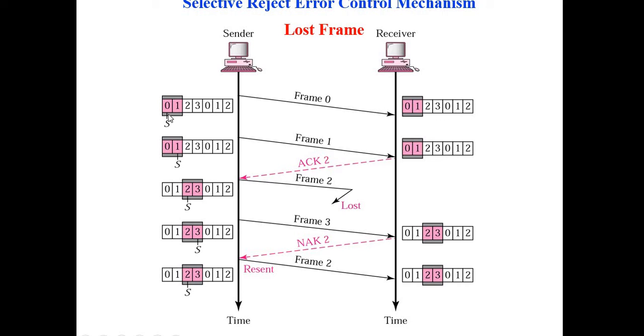So here in this example, S is equal to 0, frame 0 is transmitted. The receiver can receive frame 0 or frame 1 also. It's not necessary it has to receive 0 only. So 0 is sent and 0 is received. Now S shifts to 1, frame 1 is transmitted, frame 1 is received.